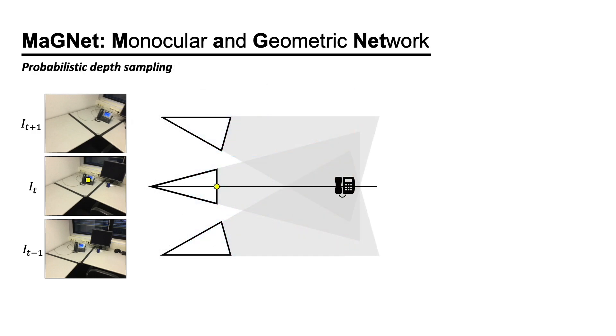Firstly, we propose probabilistic depth sampling. Instead of sampling the depth candidates uniformly, we estimate the single-view depth probability distribution, define the search space, and sample a small number of depth candidates. This improves the efficiency of the multi-view matching.